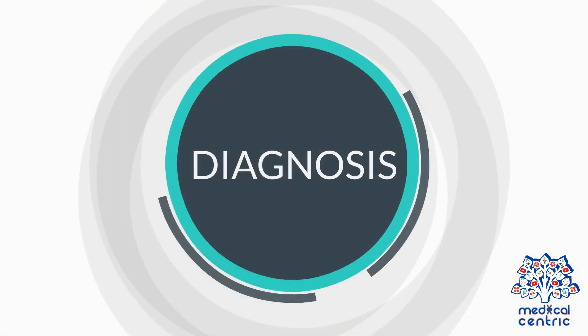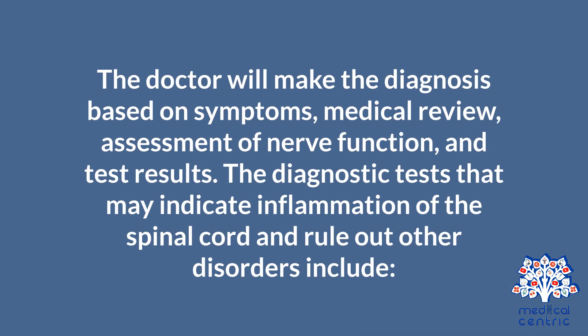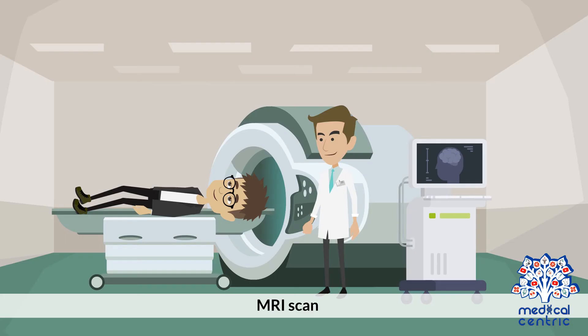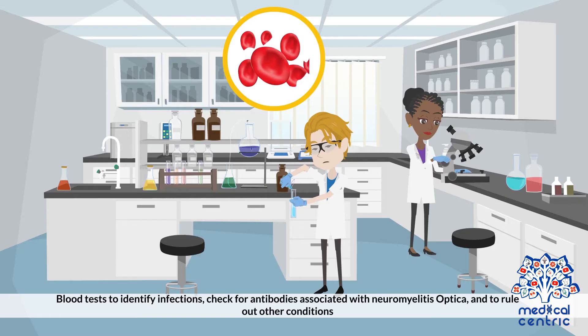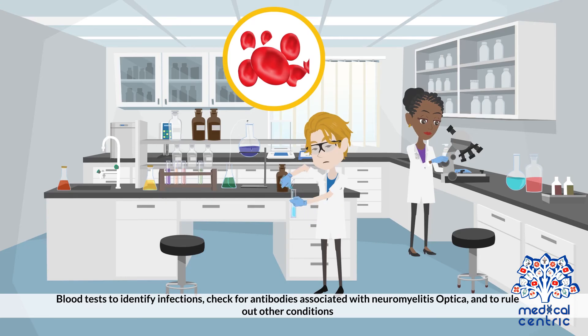Diagnosis and treatment. The doctor will make the diagnosis based on symptoms, medical review, assessment of nerve function, and test results. Diagnostic tests that may indicate inflammation of the spinal cord and rule out other disorders include MRI scan, lumbar puncture where a needle is used to draw a small amount of cerebrospinal fluid (CSF) that surrounds the spinal cord and brain, blood tests to identify infections, and checks for antibodies associated with neuromyelitis optica to rule out other conditions.